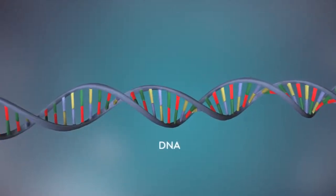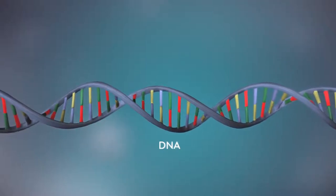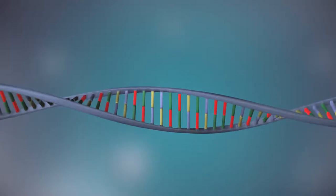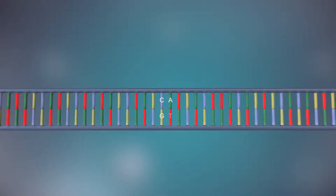DNA is a molecule made up of two strands twisted around each other in a double helix shape. Each strand is made up of a sequence of four chemical bases represented by the letters A, C, G, and T.